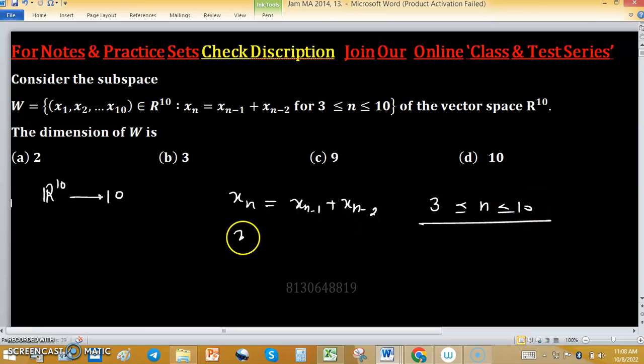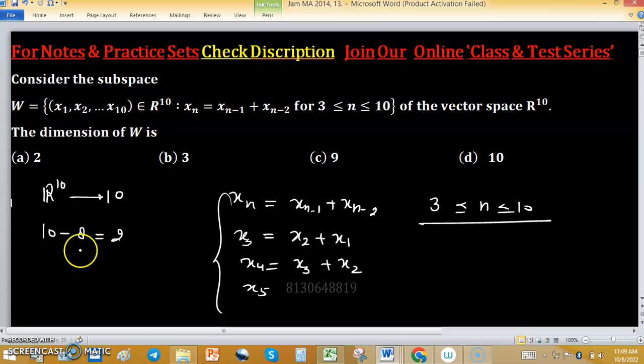How many conditions do we have? x_3 = x_2 + x_1, x_4 = x_3 + x_2, x_5, x_6, x_7, x_8, x_9, x_10. We have 8 independent conditions. So 10 - 8 = 2, and the dimension of W is 2.